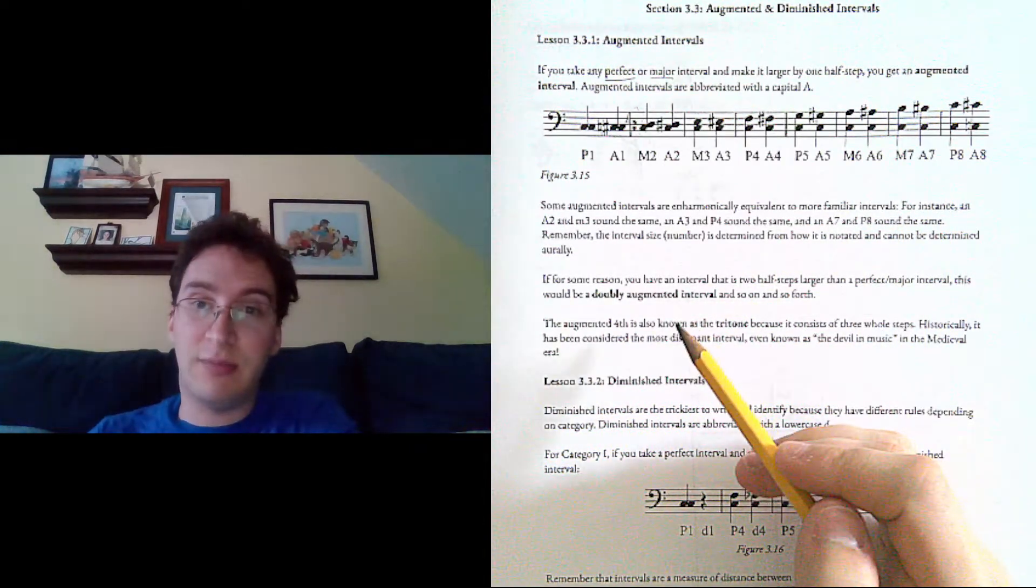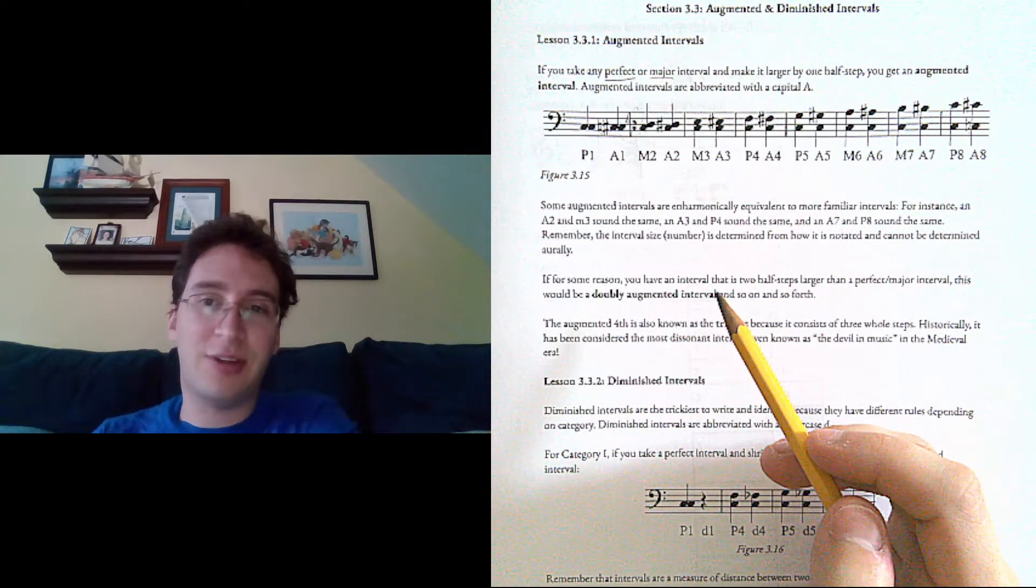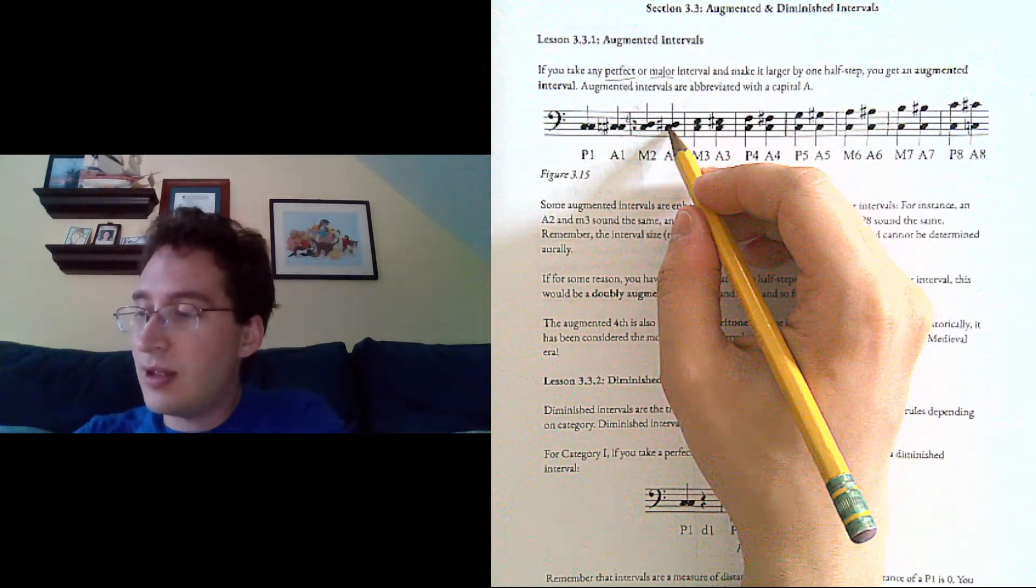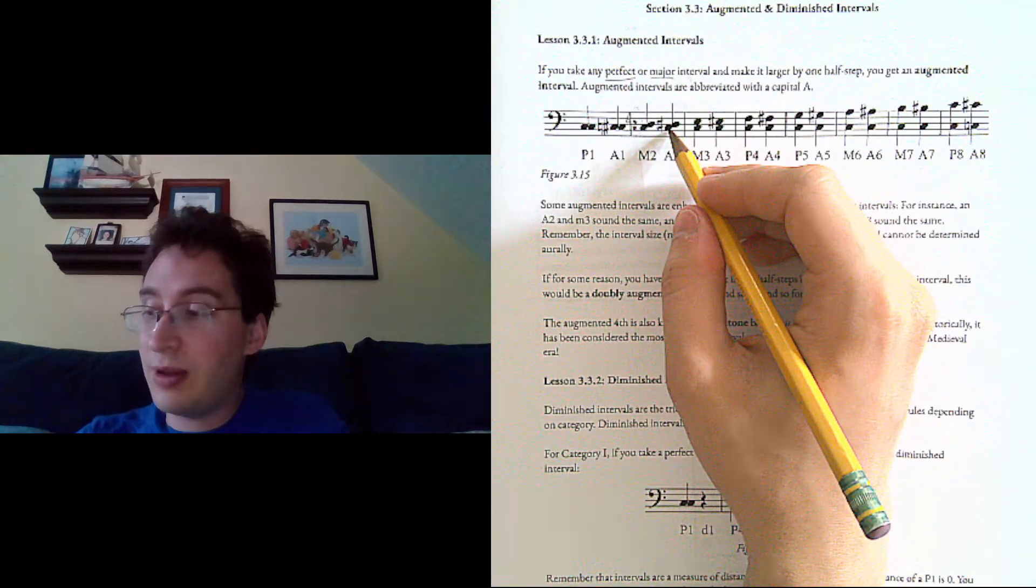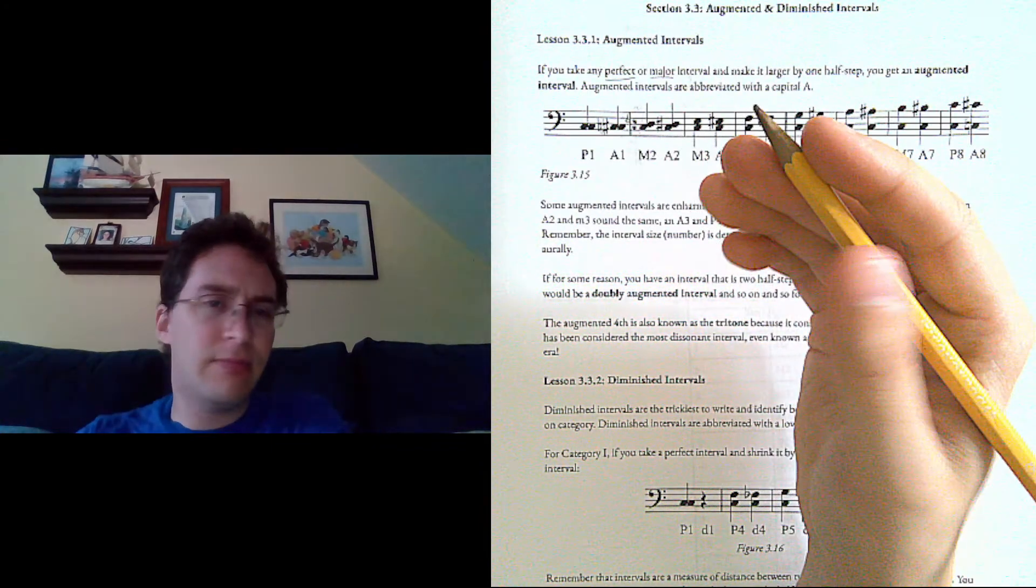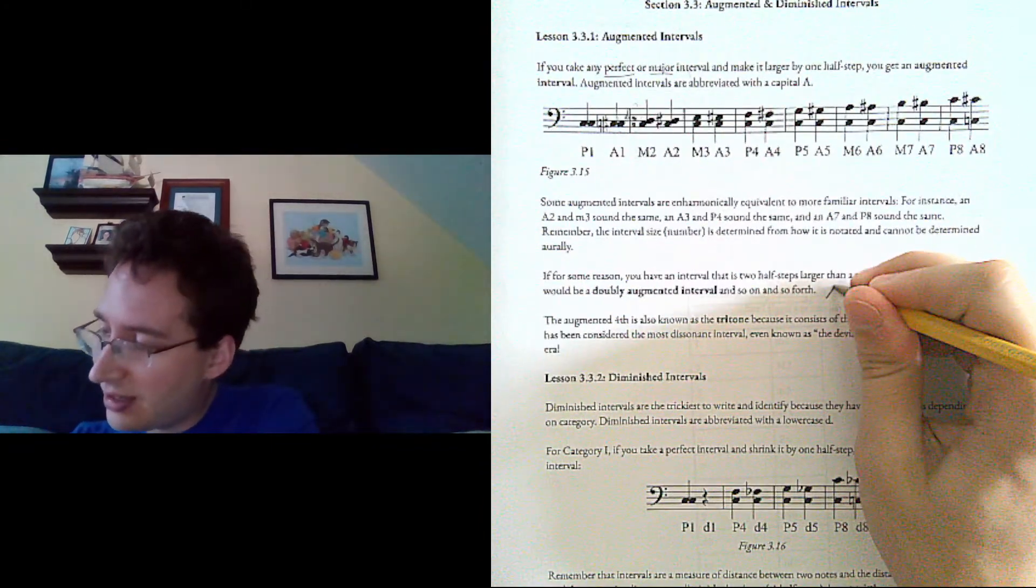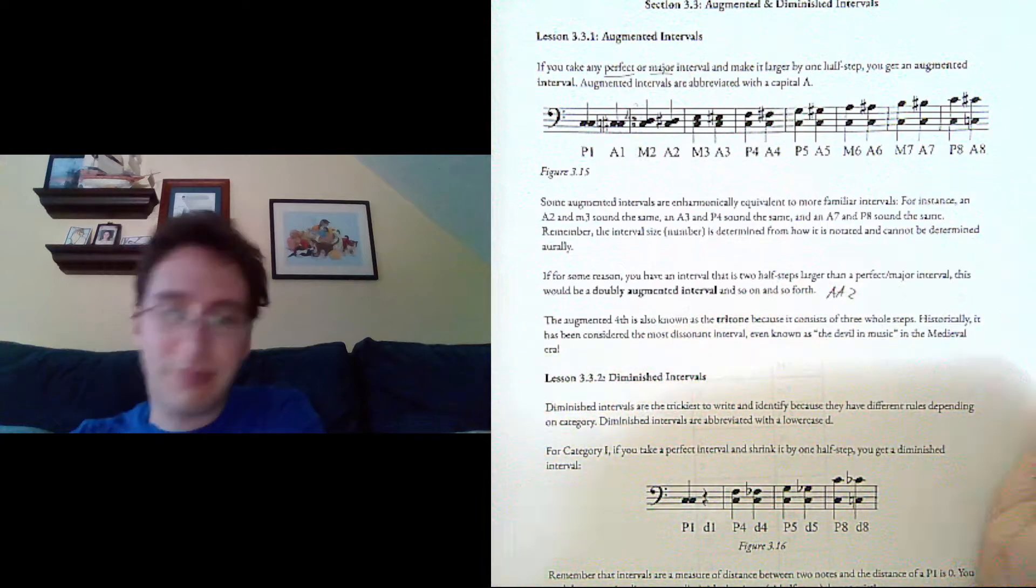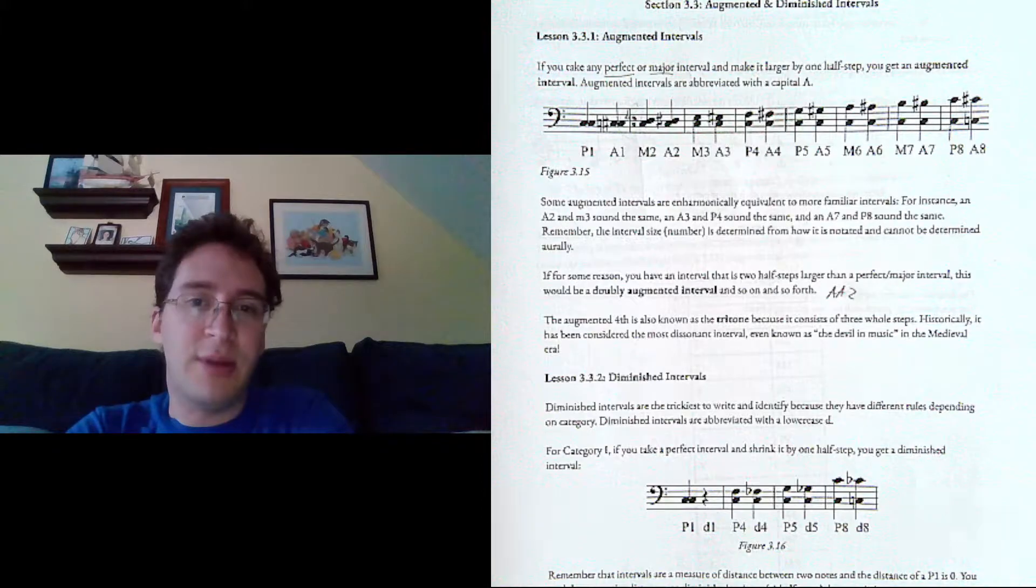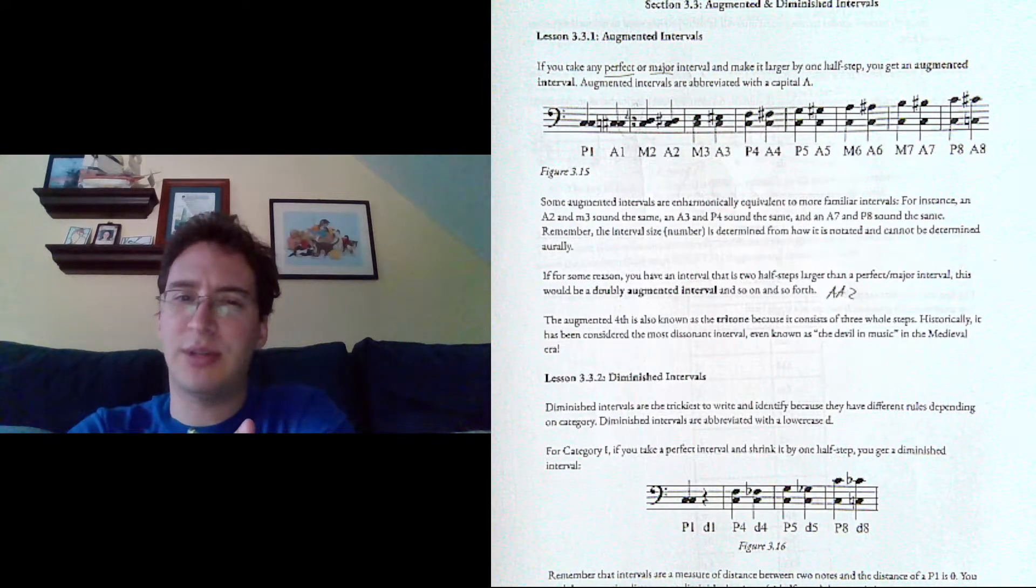If, for some reason, you have an interval that's two half steps larger than a perfect or major interval, it would be doubly augmented. So if you took this second, an augmented second C to D sharp, a doubly augmented second would be C flat to D sharp. And I guess you would write, like, that. And it would keep going. I mean, you could have triply, quadruply augmented, but like, at that point, you just have to start questioning your life decisions that led up to this point. And also, the life decisions that didn't lead up to this point.